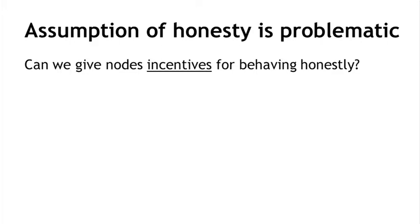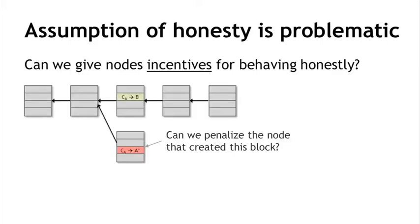Let's look at this with respect to the picture we've been looking at. This is the long-term consensus chain, and this block contains an attempt to double-spend. We can ask: can we penalize somehow the node that created this block? But this is problematic for a number of reasons, including the fact that nodes don't have identities, and so there's no way to go after them to penalize them.